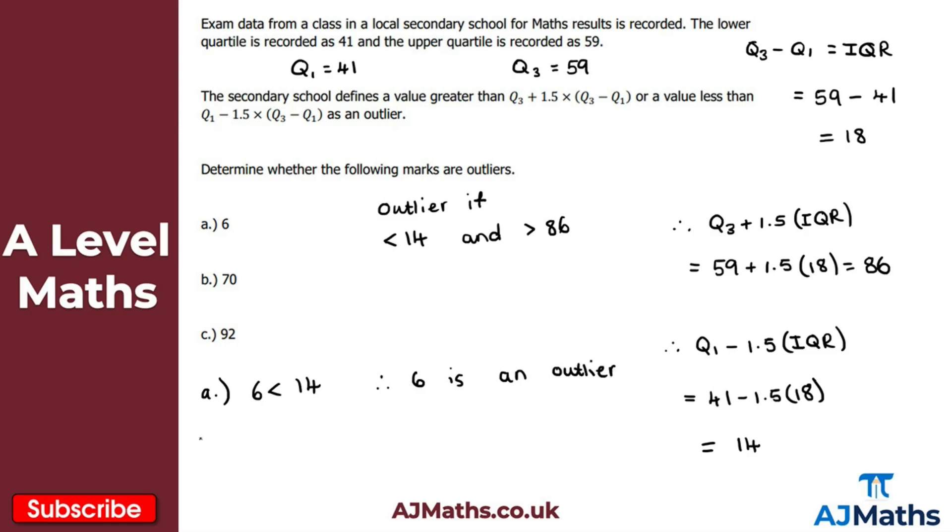So part B then, we've got 70 here. So 70 is greater than 14, so that means it won't be an outlier in that case, but it's less than 86. So 70 is greater than 14 and 70 is less than 86. Therefore not an outlier.